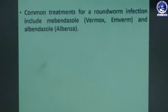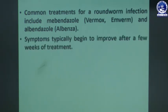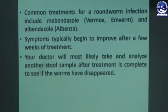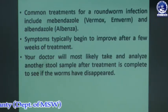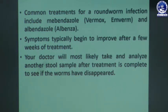Common treatments for roundworm infection include mebendazole and albendazole. Symptoms can improve after a few weeks of treatment. After treatment is complete, your doctor will most likely take and analyze another stool sample to see if the worms have disappeared, and may also test your blood.